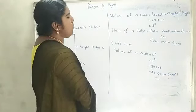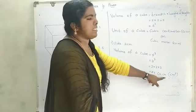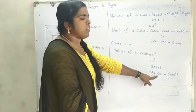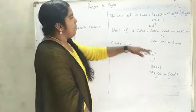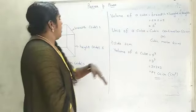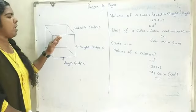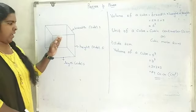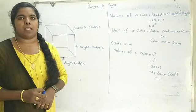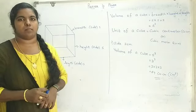Volume of a cube whose side is 3 cm means 27 cubic centimeter. The formula is volume of a cube is equal to S cube. In a cube, there are 6 faces and each face is a square. That's all. If you like this video, please press the like button and subscribe. Thank you.